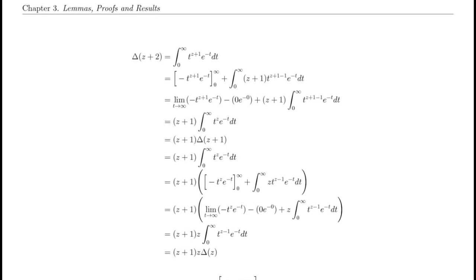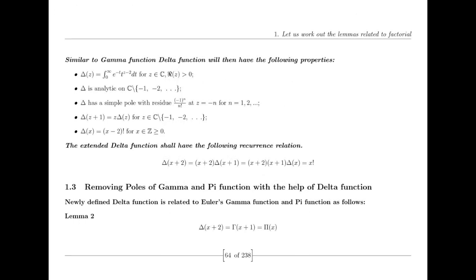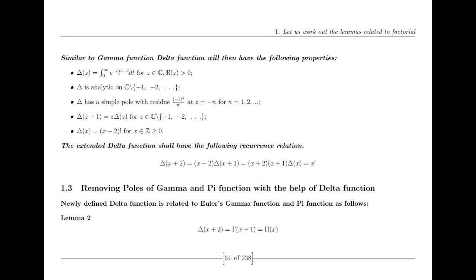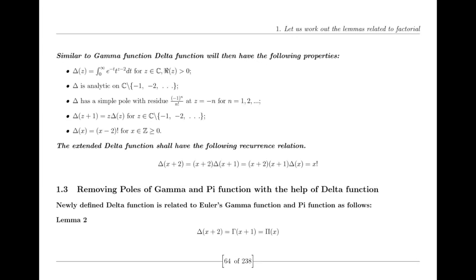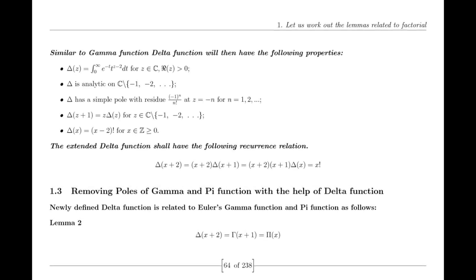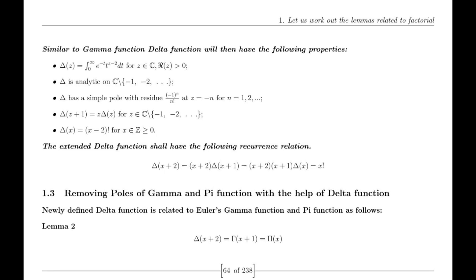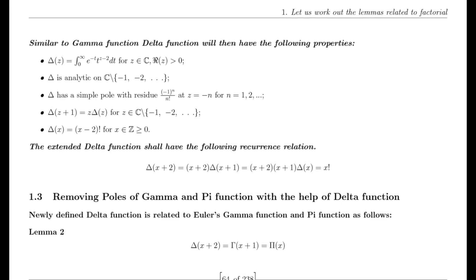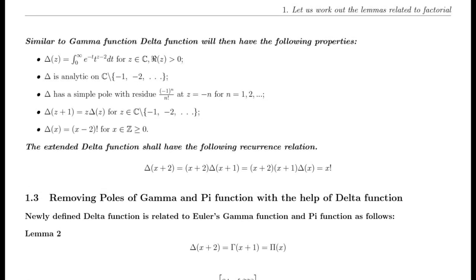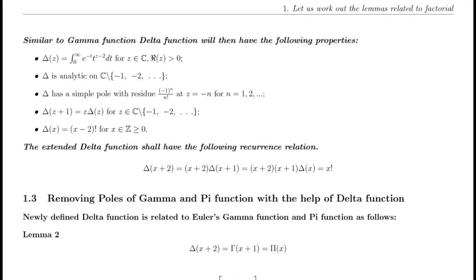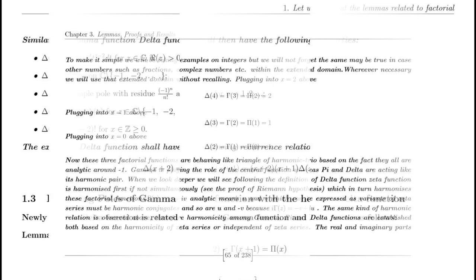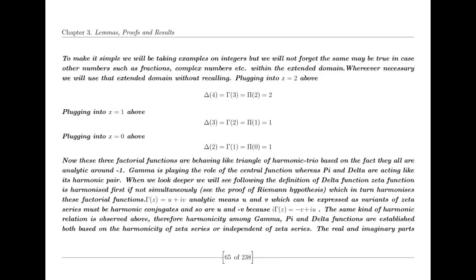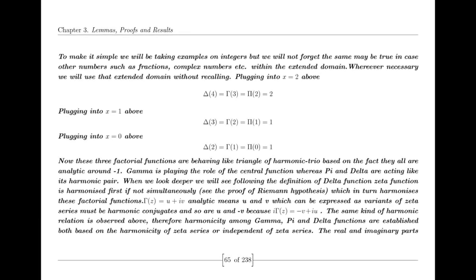In any groundbreaking work, especially one as monumental as a proposed proof of the Riemann hypothesis, critique and skepticism are inevitable. The strength of my proof lies not only in the mathematical rigor but in the innovative approach that challenges traditional boundaries. Critics may argue that extending the Riemann zeta function through an alternate functional equation is unconventional. However, history has shown that mathematical progress often comes from reimagining established concepts. The alternate functional equation, derived from the reflection properties of the zeta and gamma functions, is not an arbitrary extension; it is deeply rooted in the inherent symmetries of these functions. By exploring these symmetries, I've uncovered a new perspective that adds coherence to the zeta function's behavior.